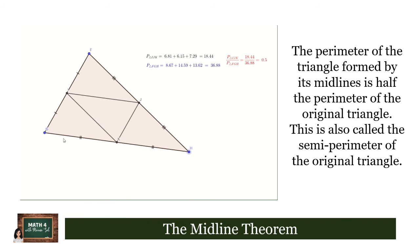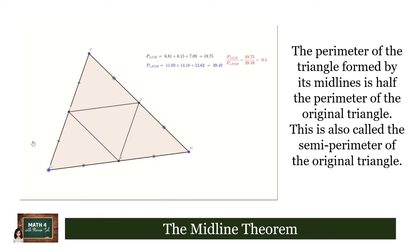And then let's try to move the vertices involving the third side and let's see what happens to the ratio. So as we have observed, the ratio between these two perimeters—the perimeter of the triangle formed by the midlines is half the perimeter of the original triangle. This perimeter is also called the semi-perimeter of the original triangle.